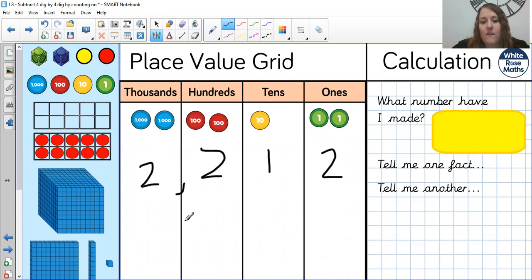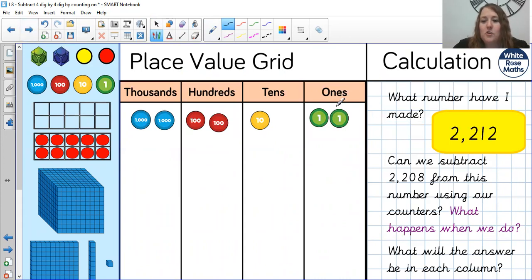If you can think of a fact for this number and another one and even another one. From 2,212, which I've now written in this yellow box, can we subtract 2,208 from this number using our counters? So what happens if we were to take these? Now we could take these, but we'd need to exchange because there aren't enough ones.